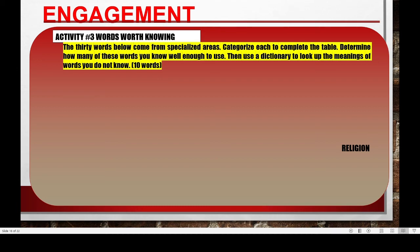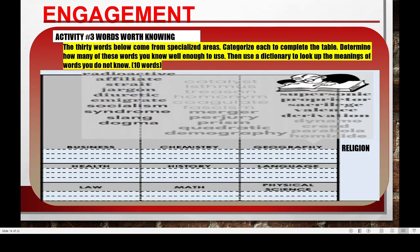In activity three, 'Words Worth Knowing', the 30 words below come from specialized areas. Categorize each to complete the table. Determine how many of these words you know well enough to use, then use a dictionary to look up the meanings of the words that you do not know. List at least 10 difficult words. For example, the word 'radioactive' — into which specialized area do you think it belongs? Does it belong to business, chemistry, geography, health, history, language, law, math, physical science, or religion?